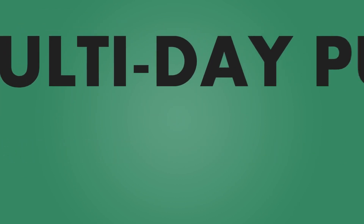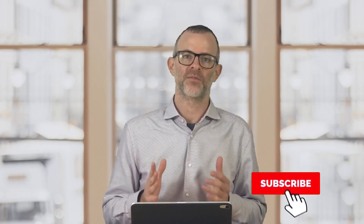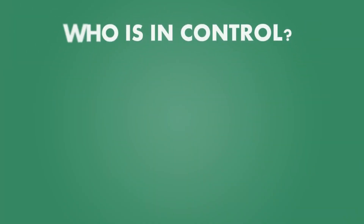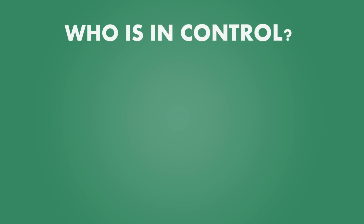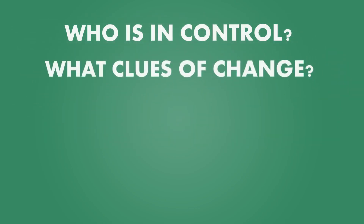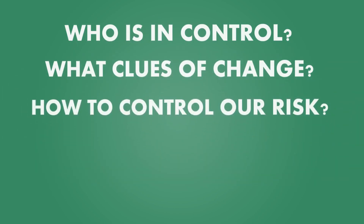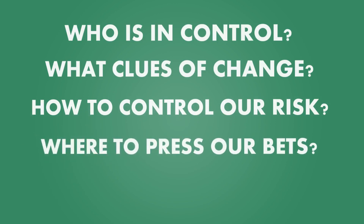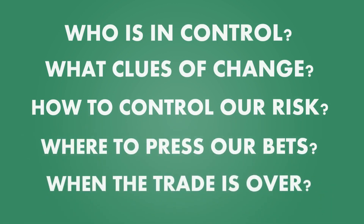Today's trade is titled 'After the Dust Settles' swing trade strategy — what I call a pullback swing trade. We identify a hot stock, enter after a multi-day pullback, don't go full size until we have confirmation from price action, and we'll share targets and stops. Key questions: Who is in control — buyers or sellers? What clues do we see for change? How do we control our risk? When do we press our bets? When is the trade over?